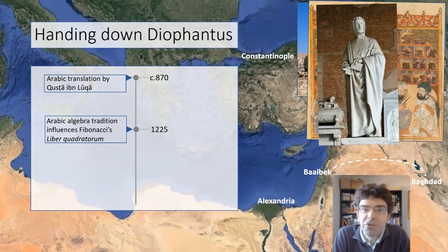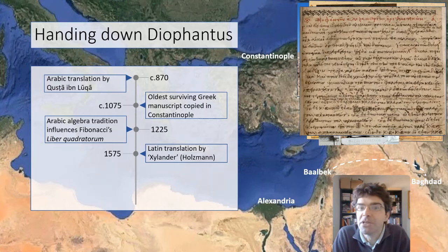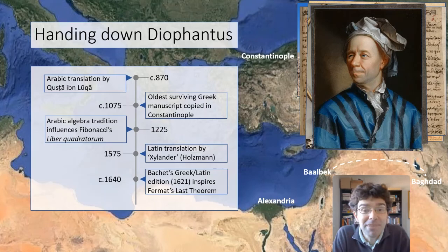Meanwhile in Constantinople, Diophantus was being read in Greek. The earliest surviving manuscript dates to around 1075 and was the subject of study throughout the 13th century. But it was actually only much later that the Greek text was translated into Latin or published in its own right, so that it could be studied by mathematicians including Fermat in the 17th century, and then Newton, Euler and many others. In fact, Fermat's Last Theorem supposedly started life as an annotation in his copy of Diophantus.